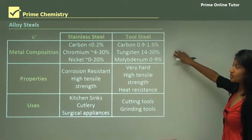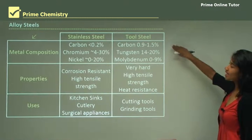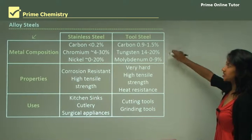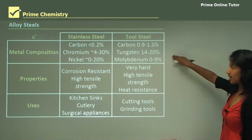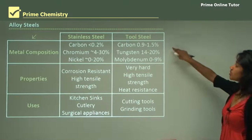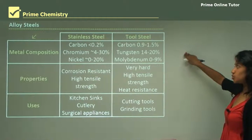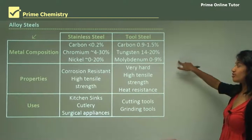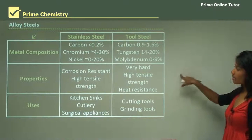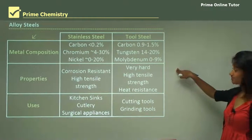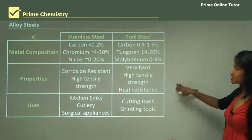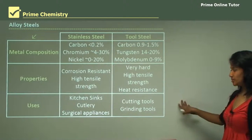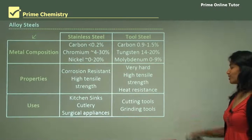Tool steel is also an alloy steel. It has a relatively large carbon content of 0.9 to 1.5%, and contains tungsten and molybdenum — tungsten at 14 to 20% and molybdenum at 0 to 9%. Properties include being very hard, having high tensile strength, and heat resistance. These properties make it very useful for cutting tools and grinding tools.